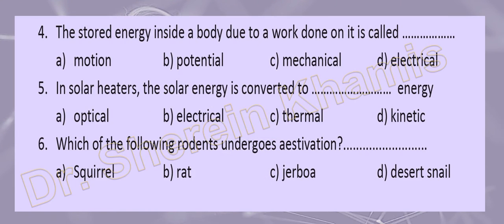Question number four: stored energy inside the body due to work done on it is called what? In exam one we had work done during motion — that is kinetic energy. Here we have stored energy inside the body due to work done on it — the answer is potential energy. The sum of potential and kinetic energies is called mechanical energy.